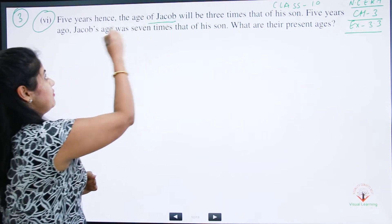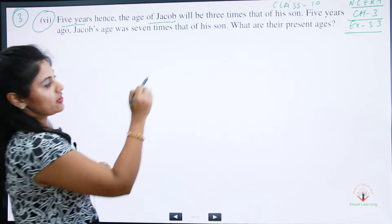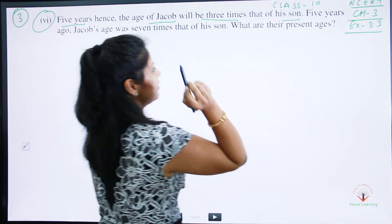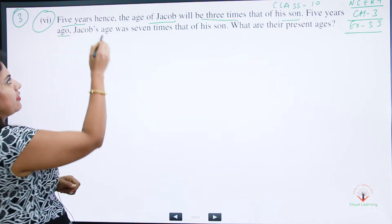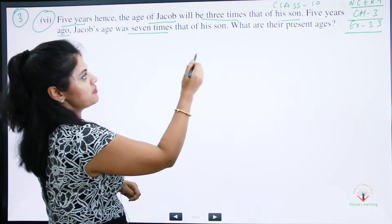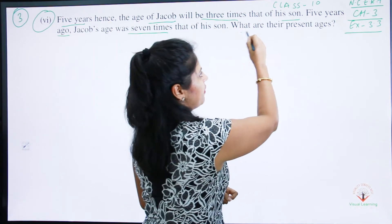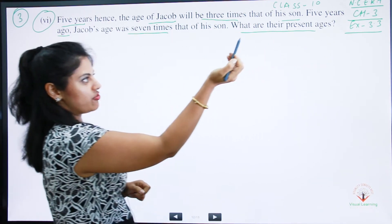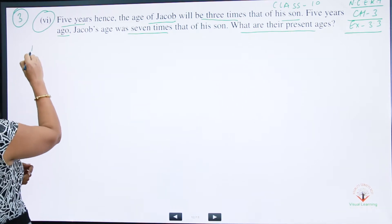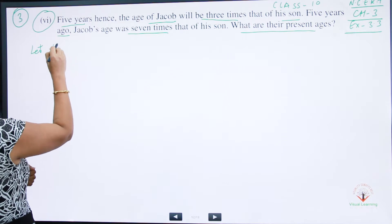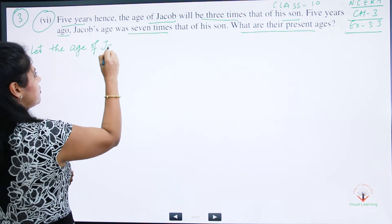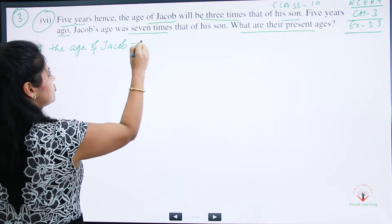Five years hence, the age of Jacob will be three times that of his son. Five years ago, Jacob's age was seven times that of his son. What are their present ages?